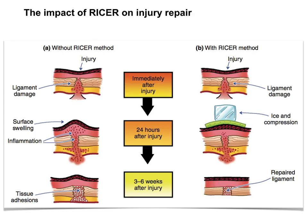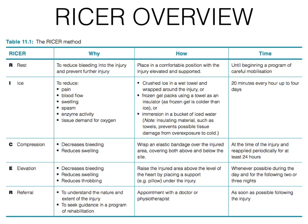In this image, you can see the clear difference between an injury that has not used RISA and one that has. On the left-hand side, a ligament injury shows quite dramatic swelling and a large amount of inflammation, with significant resulting scar tissue. On the right-hand side where RISA has been used, the inflammation and swelling are much less, resulting in much less scar tissue. Less scar tissue means greater flexibility, greater range of motion, and a lower likelihood of re-injury. This table provides a good overview of RISA — pause the screen to take a closer look and make notes.